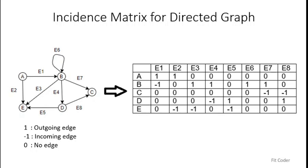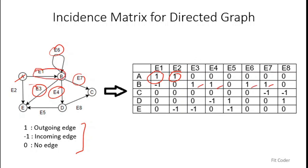Now let's see what happens with a directed graph. In an undirected graph direction does not matter, so we fill 0 and 1. In a directed graph the edge direction also matters, so we fill three possible values: 0, 1, and -1. For outgoing edges we fill 1, for incoming edges we fill -1, and if no edge is present we fill 0. For A, two outgoing edges E1 and E2 get entry 1. For B, outgoing edges E7, E6, E4, and E3 are 1, and incoming edge E1 is -1. For C, incoming edges E7 and E8 are -1.